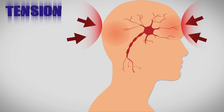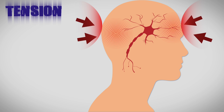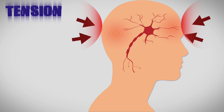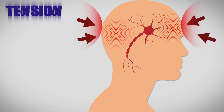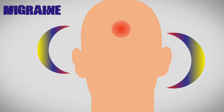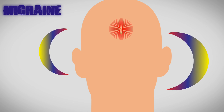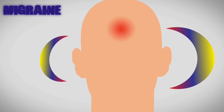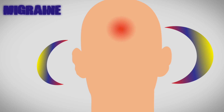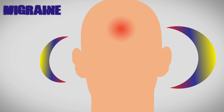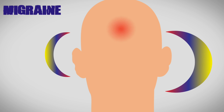Tension headaches are the most common and bring extreme pressure to your forehead or back of your head. Migraines are also very common, causing severe throbbing pain and sometimes causing foggy auras that make it hard for you to see.